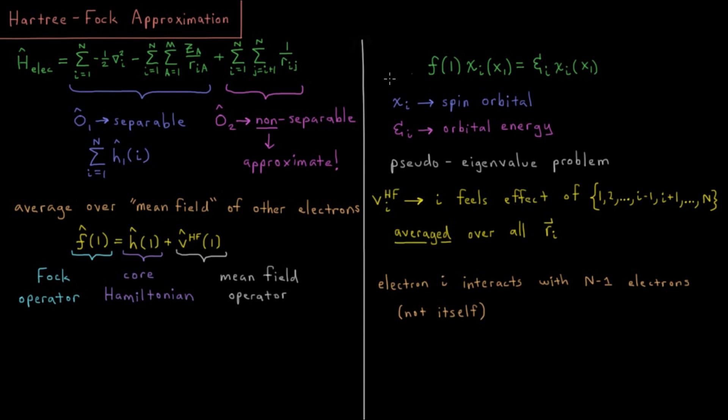But of course, there's a problem here. This isn't actually an eigenvalue problem, because it's what we would call a pseudo-eigenvalue problem. And the reason for that is that this mean field operator isn't a linear operator. It actually depends on what all the other orbitals are. We can't separate it into a kind of thing that only depends on this orbital, because it depends on what all the other orbitals are, too.